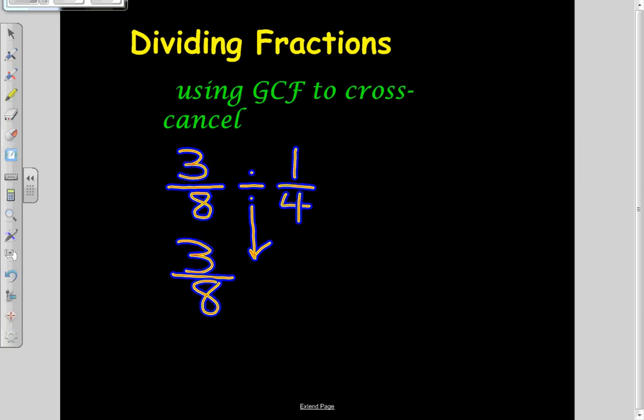And we're going to multiply by the reciprocal. So when you change the division sign into a multiplication sign, that means we need to change this fraction, 1 fourth, into its reciprocal. Now, what is a reciprocal? A reciprocal is basically when you flip the numerator and denominator. So the reciprocal of 1 fourth would actually be 4 over 1.